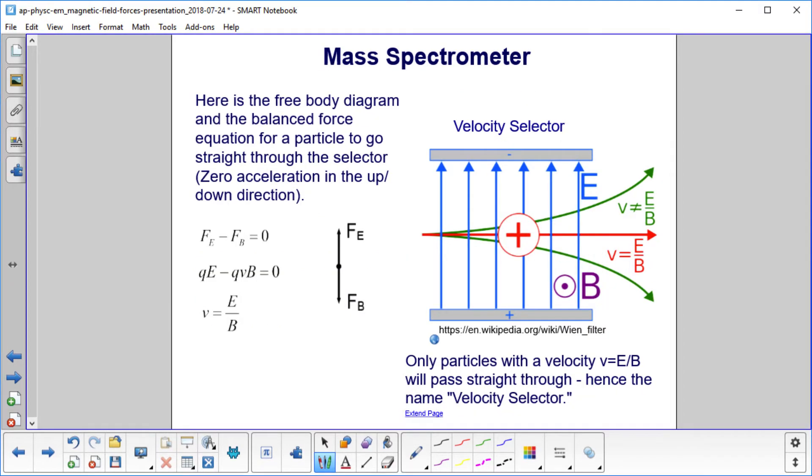We have fields that have forces, and we have a particle that we want to go left to right. We need a free body diagram. If we want the particle to go straight through, we need to have an acceleration of zero in the up and down direction.